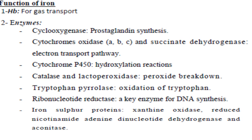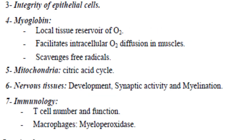The function of iron is mainly the manufacture of hemoglobin, whose main function is to carry oxygen. Iron is also included in the composition of important enzymes that cannot work without it. It is very important for the integrity of epithelial cells, and for myoglobin, which facilitates intracellular oxygen diffusion and helps eliminate free radicals in the mitochondria. In the mitochondria, iron is required to complete the citric acid cycle. It is also important for the integrity of the nervous system and immune system.